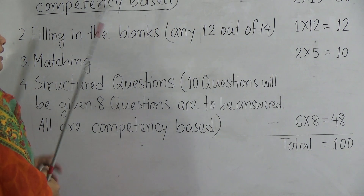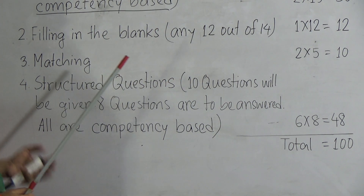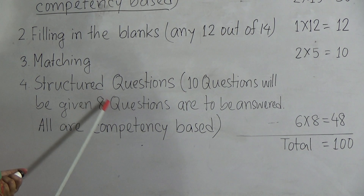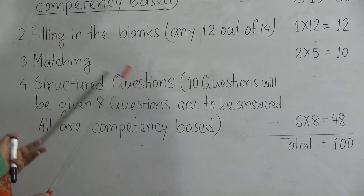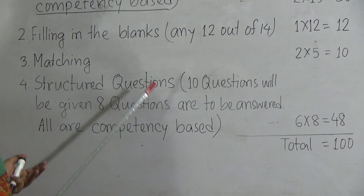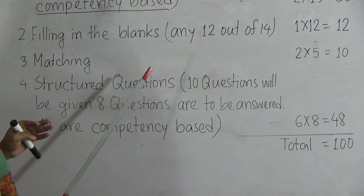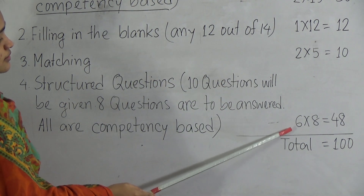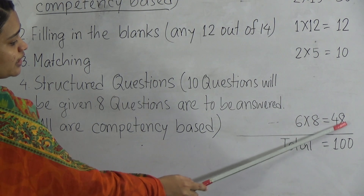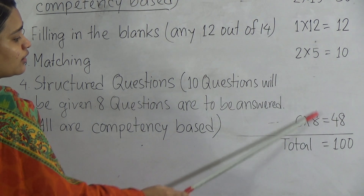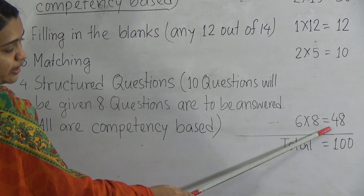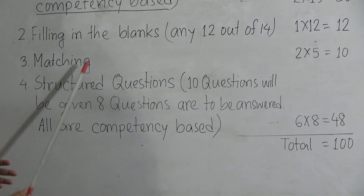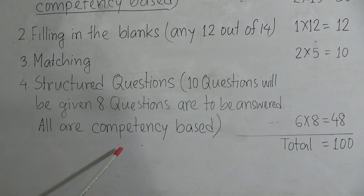There can be 2 or 3 parts in each competency-based question. When answering broad or structured questions, you will find 2 or 3 parts, and you should write 2 or 3 paragraphs accordingly. You have to answer 8 questions, and 6 multiplied by 8 equals 48, so structured questions carry 48 marks in total. To be clear: 10 questions will be given and you have to answer any 8.